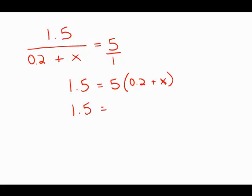On the right side, 5 times 0.2—that's really 5 times one-fifth, which is 1—so we get 1 plus 5x.